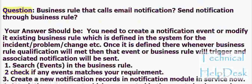Question: How does a business rule call an email notification? Your answer should be: You need to create a notification event or modify an existing business rule which is defined in the system for incident, problem, change, etc. Once it is defined, whenever the business rule qualification is met, that event or business rule will trigger and an associated notification will be sent.